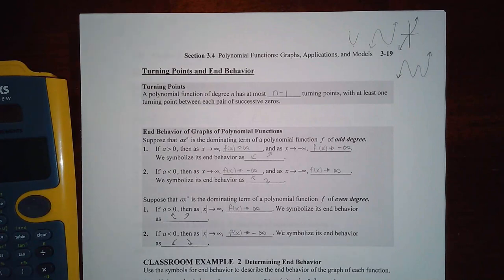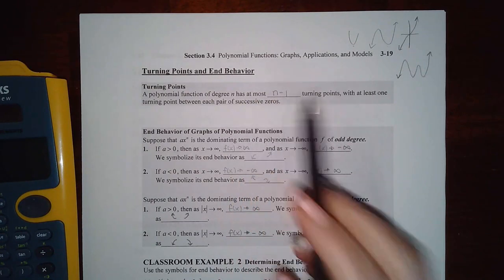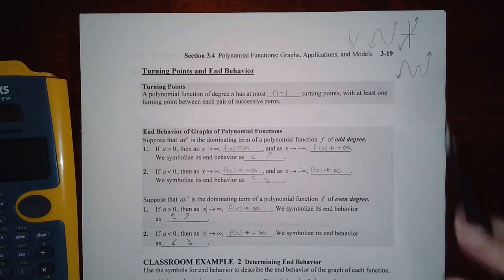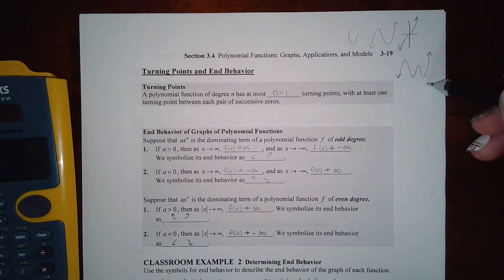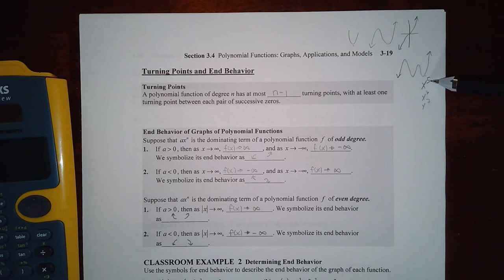So it really has at most n minus one turning points. So this particular function, since I have one, two, three, four, it would actually have to be an x to the fifth or higher. It could be an x to the sixth or an x to the seventh or anything like that. But it would have to be at least five because there are four turning points.